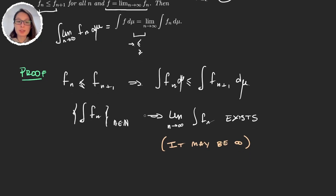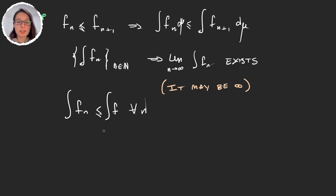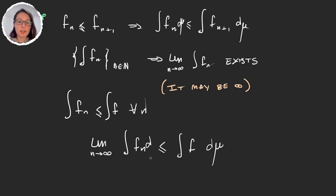Since all these functions are increasing to f, we have fn ≤ f for every n, which means the integral of fn is also less than or equal to the integral of f. Because this holds for every n, taking the limit gives us: lim integral of fn ≤ integral of f. So we've proved the first inequality.